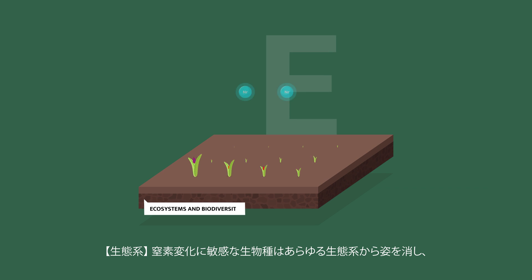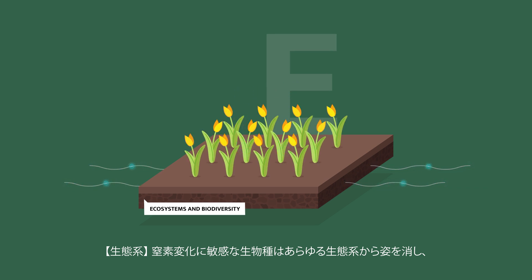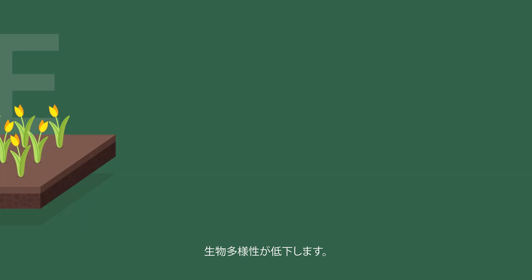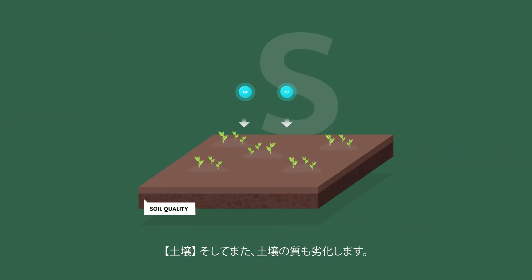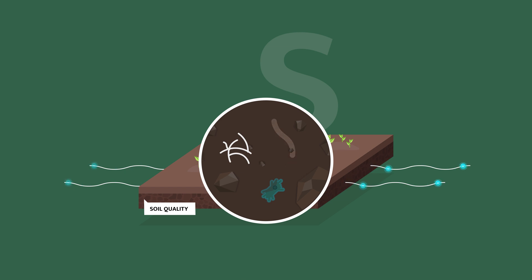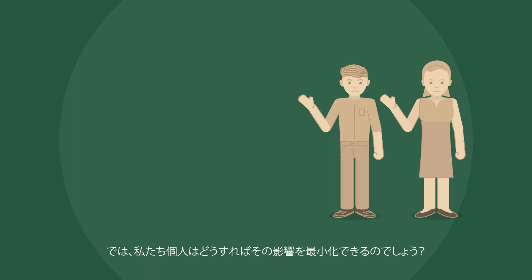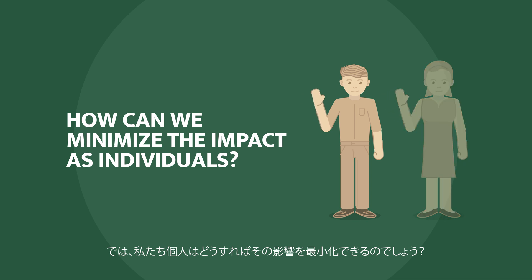It creates eutrophication, algal blooms, and aquatic dead zones. Nitrogen-sensitive species disappear from all ecosystems, which reduces biodiversity. And it also degrades soil quality. So, how can we minimize the impact as individuals?